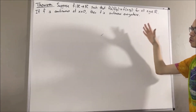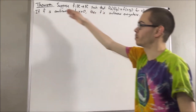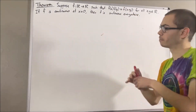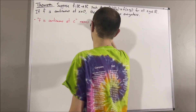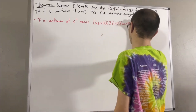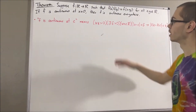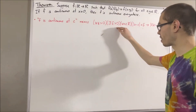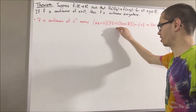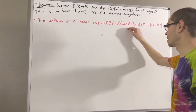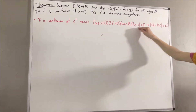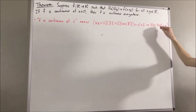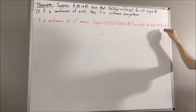Let's first remind ourselves what it means for f to be continuous at a real number c. It means for every epsilon greater than 0, there exists a delta greater than 0, such that for all real numbers x, if the absolute value of x minus c is less than delta, then the absolute value of f of x minus f of c is less than epsilon.